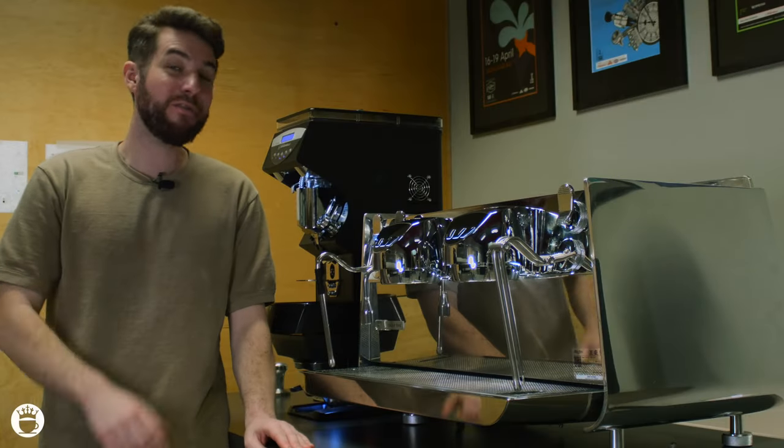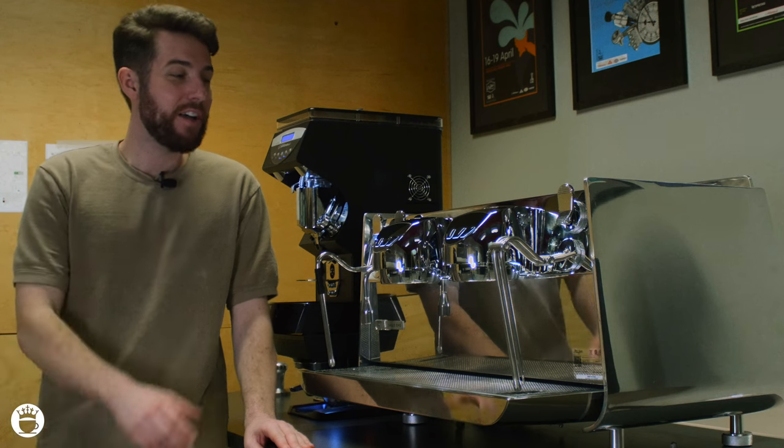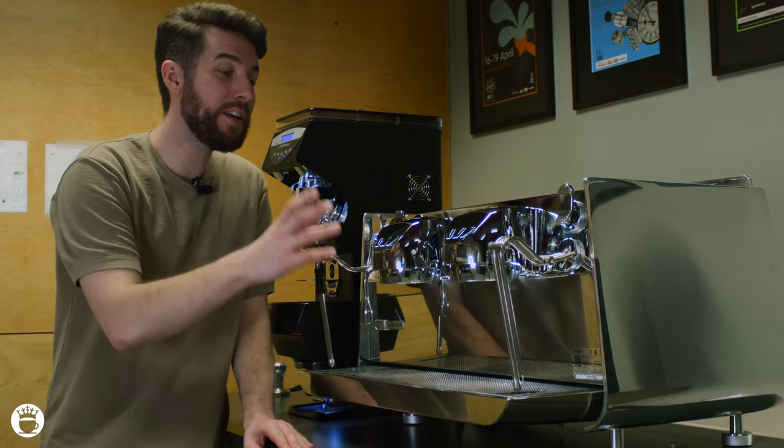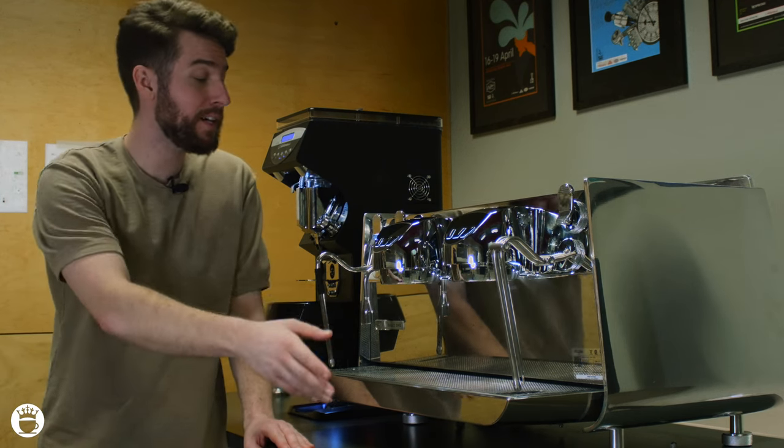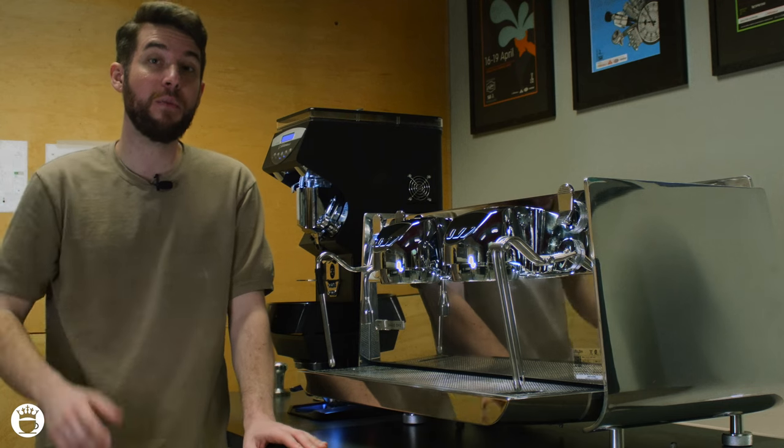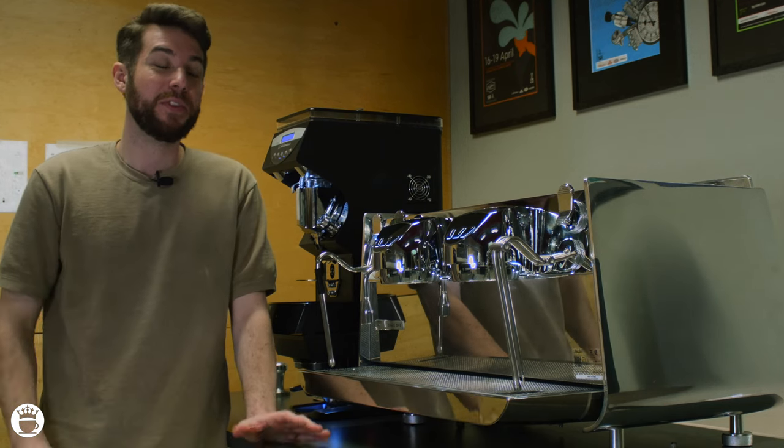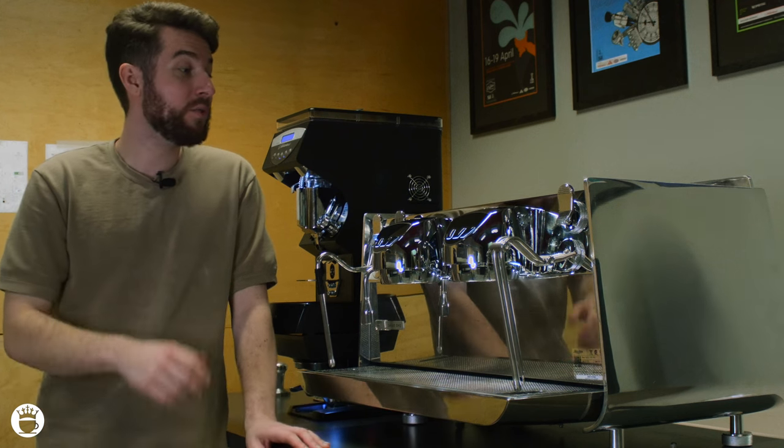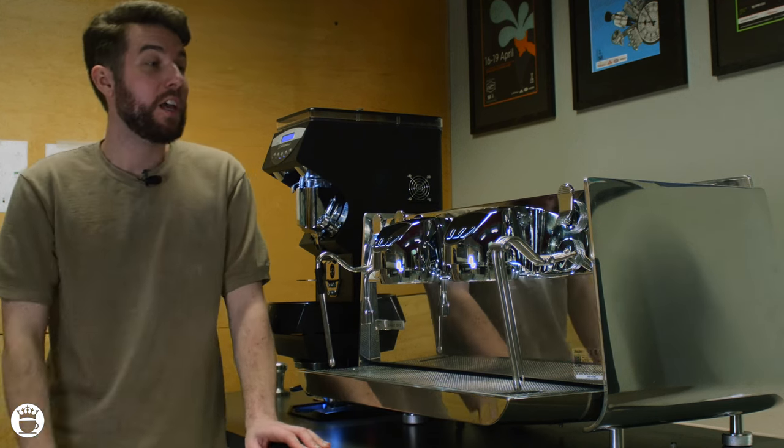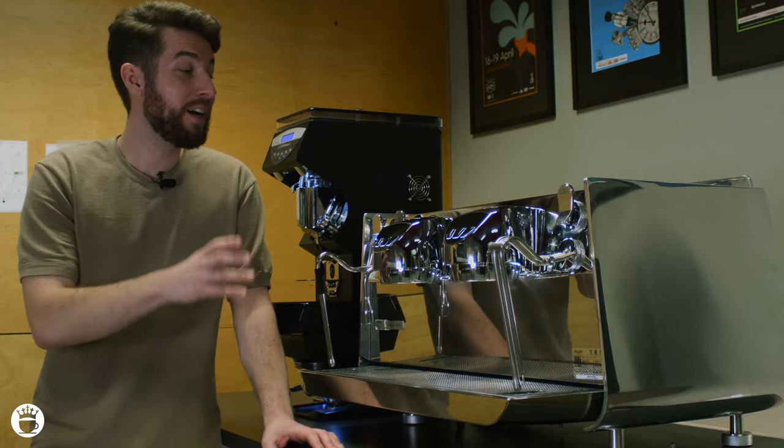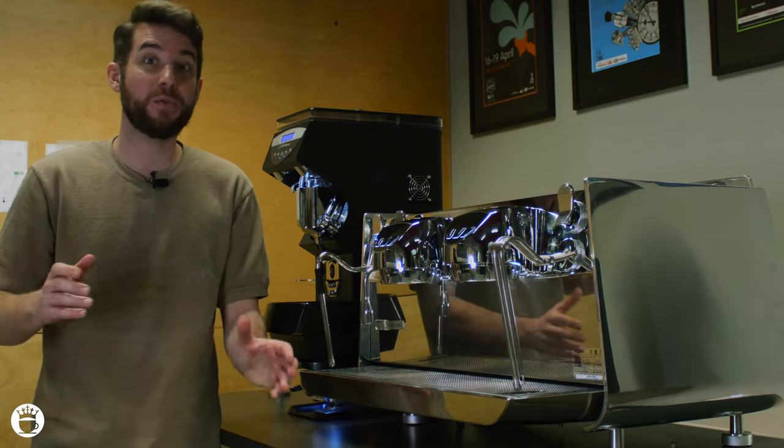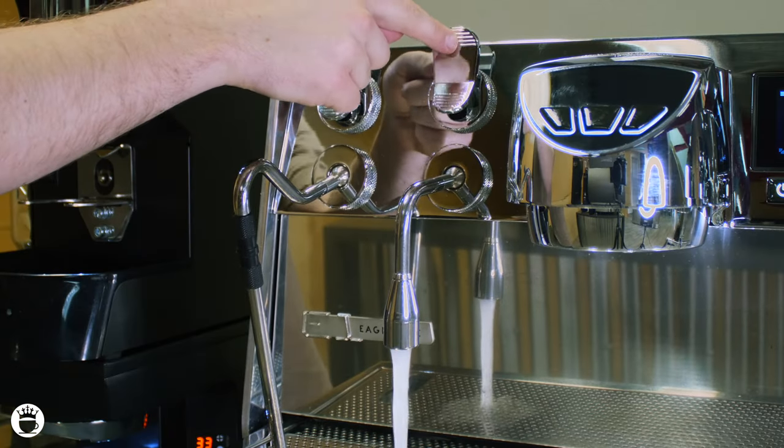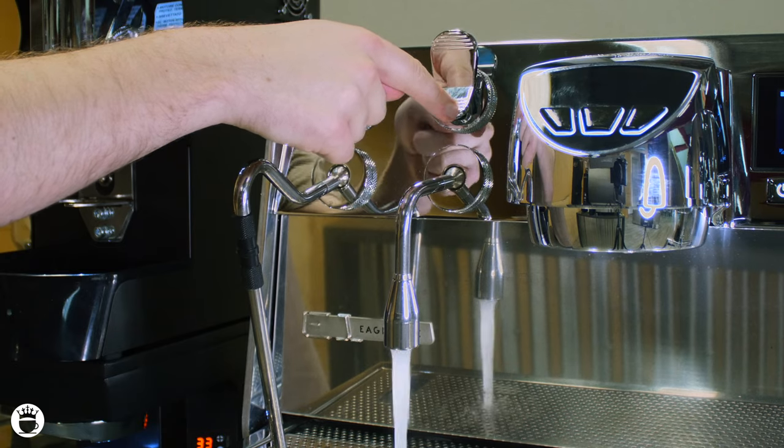So this is the Eagle One from Victoria Arduino. This model is a two group with one easy cream arm on one side and one regular manual steam arm on the other. This machine combines a lot of great ease of use features with some really nice innovation. It also pays homage to a classic design yet looks very modern and futuristic on a countertop. This machine packs in lots of great features and is really great for any cafe that is a high volume or high speed cafe.